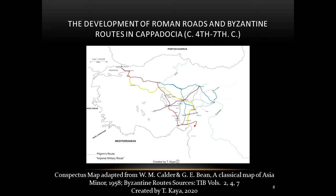This route and its variants leading to Sebastia in the north, Melitene in the east, and Germanicia in the south are known to have been used by armies and invaders. Anderson mentions that Heraclius marched from Constantinople to Caesarea in Cappadocia and thence to the east. Anderson also states Philippicus, the general of Maurice, marched to the east by way of Caesarea in 585 following the Heraclius route.